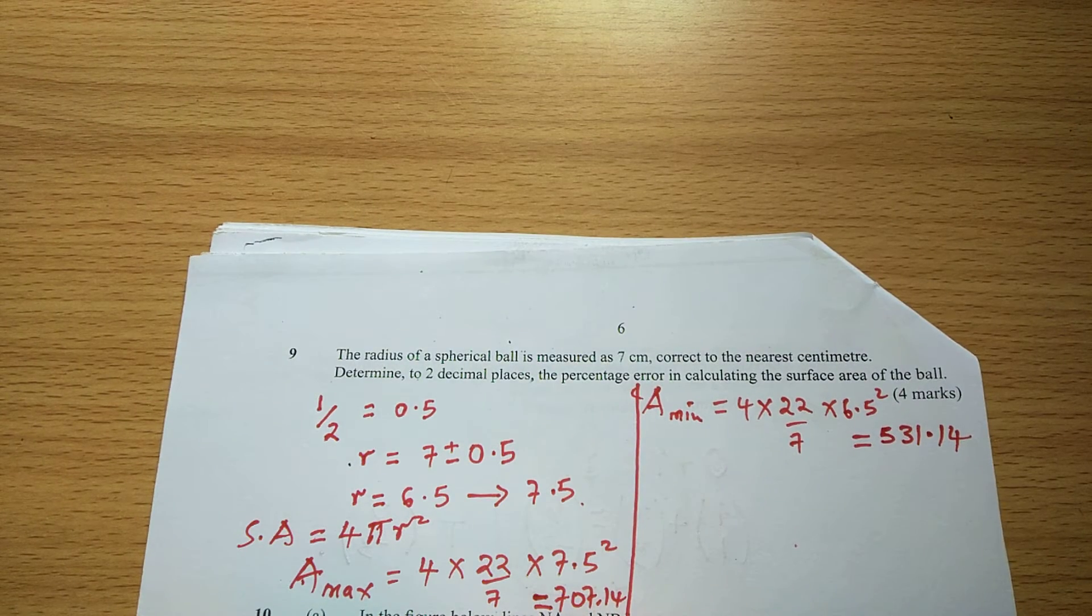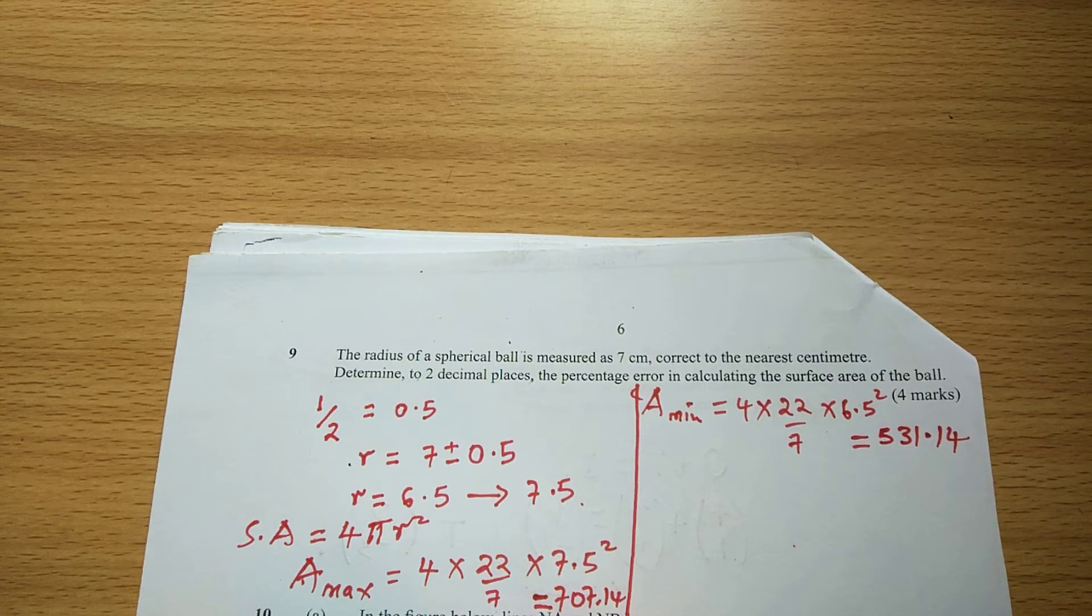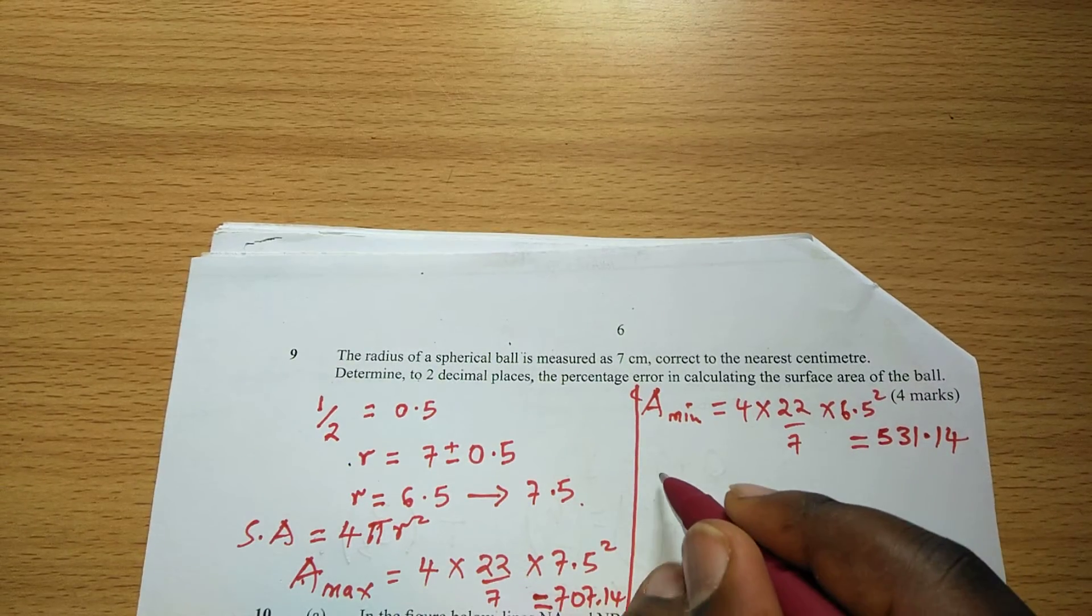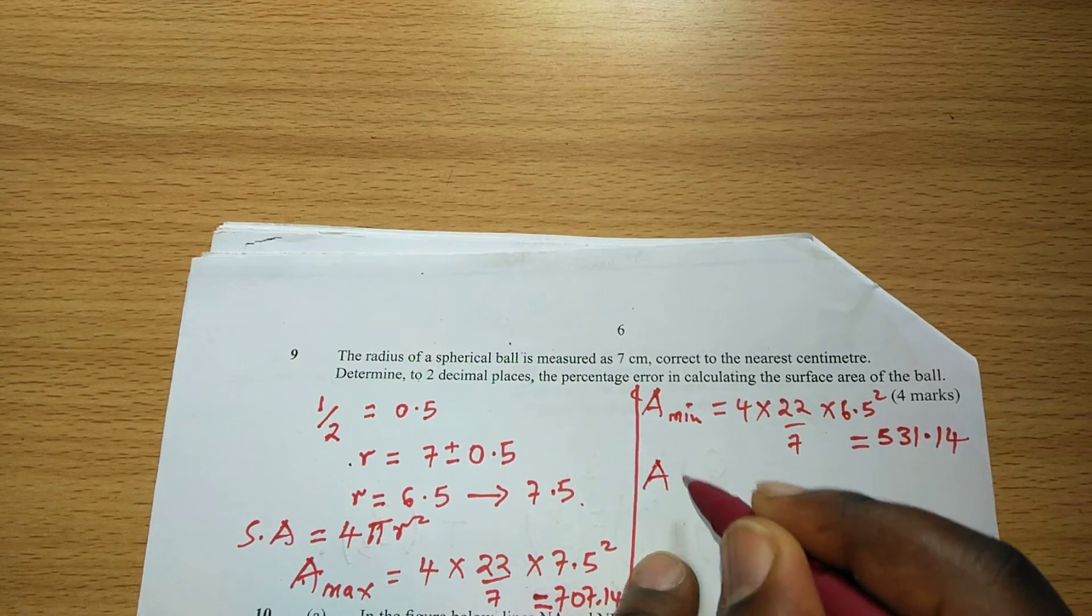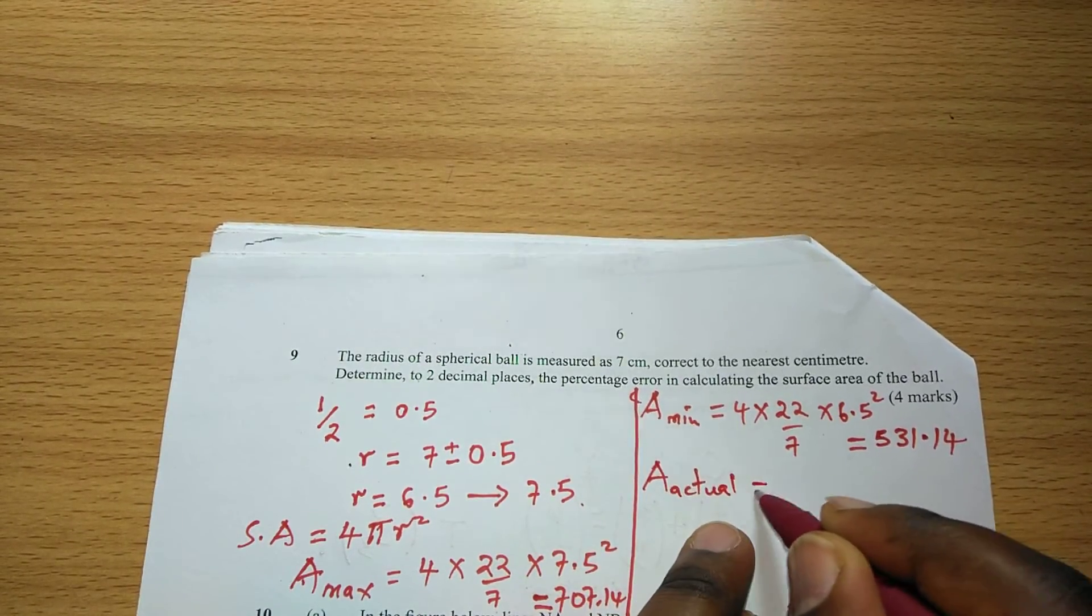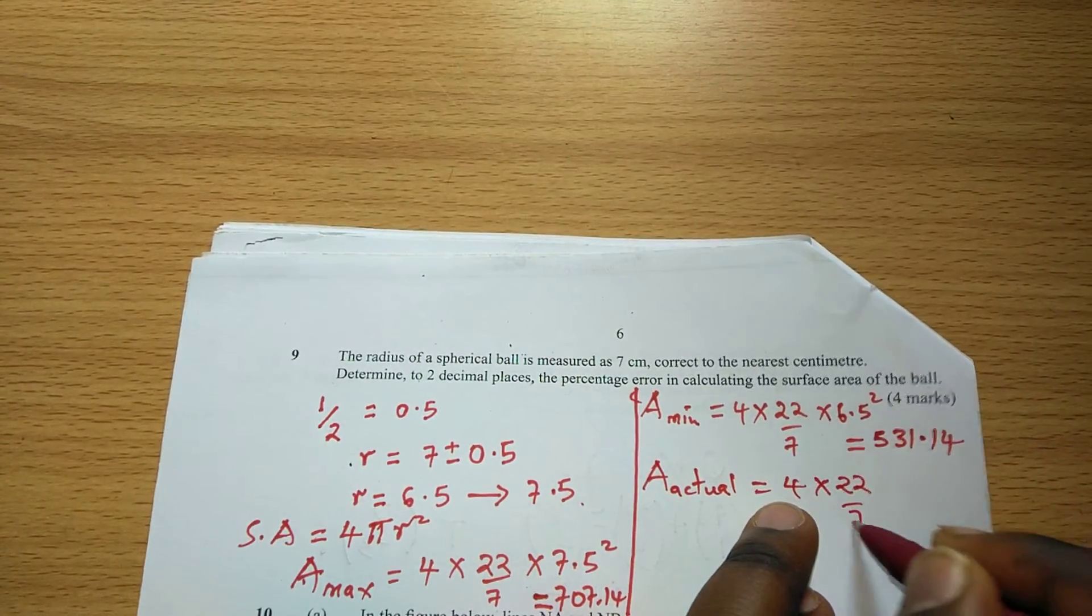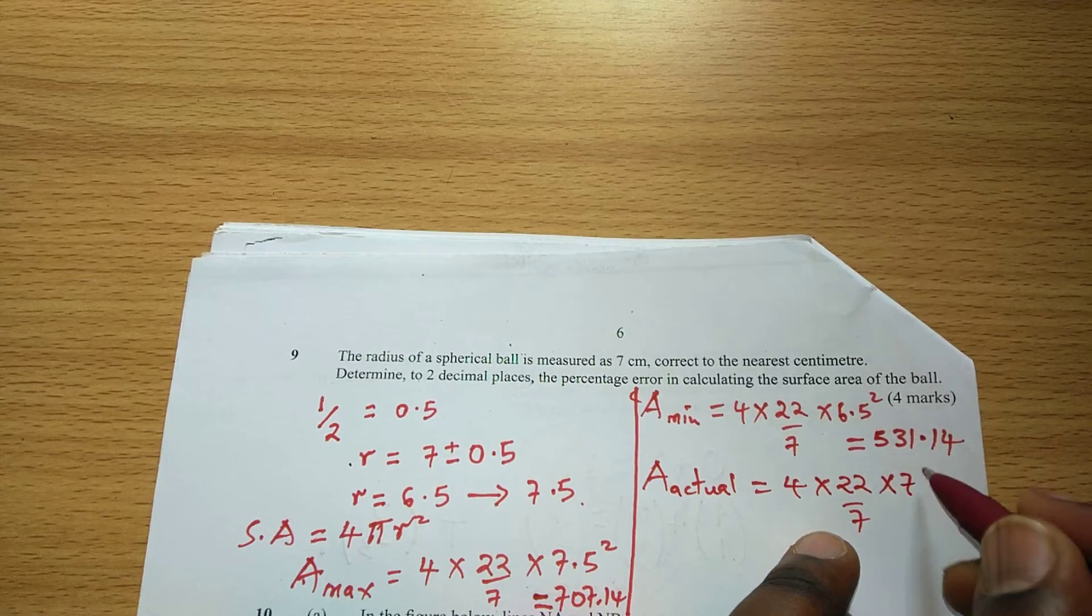So now with minimum and maximum area we can move to calculating the working area, the actual area. This one is calculated by 4 times π times r squared. Now it was recorded as 7.